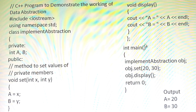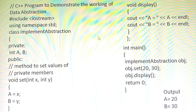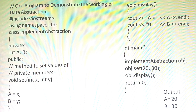Then we display the set values. Come to the main program - the class is over. In the main program, first we create the object. Give the class name ImplementAbstraction with object name obj. Through the object we can call the functions - set and display. With a class name directly we cannot access any data members or functions inside the class. Give obj.set(20, 30) - I am passing values. 20 goes to x and is assigned to A. 30 is the value of y, assigned to B.